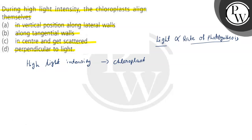But if we think that if more light is coming, then what will happen? Photo oxidation can occur. Photo oxidation means that damage will occur inside the chloroplast because of the light — if very high light is coming, then from that sunlight...